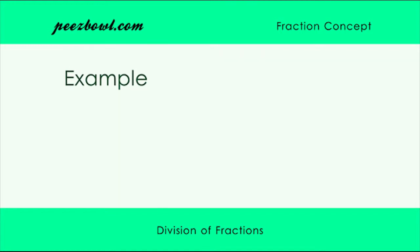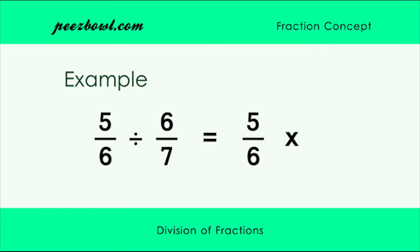Let us understand this by an example. In this example we are dividing 5 upon 6 with 6 upon 7. By applying the fraction division rule we will write our first fraction 5 upon 6 as it is, then multiply